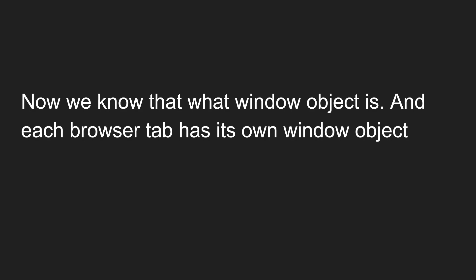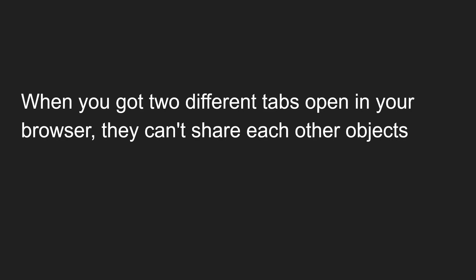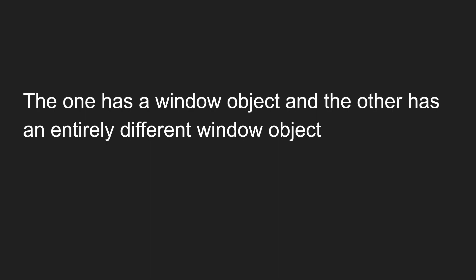Each browser tab has its own window object. The browser can have many tabs and each tab has its own window object. If you have two different tabs open in your browser, they can't share each other's objects. The first tab has a window object and the second tab also has a window object, but they are entirely different from each other — these two window objects cannot be shared.